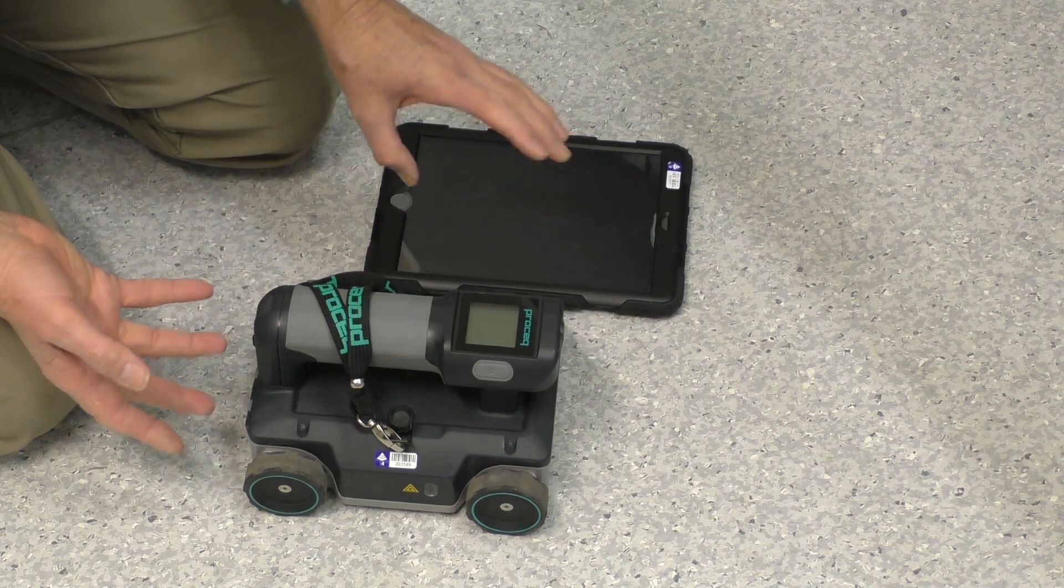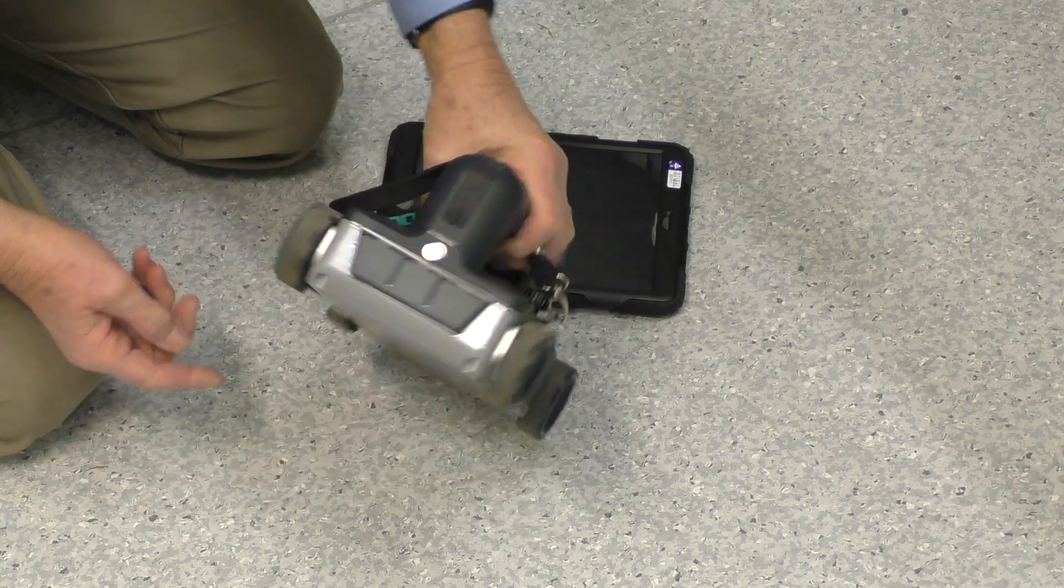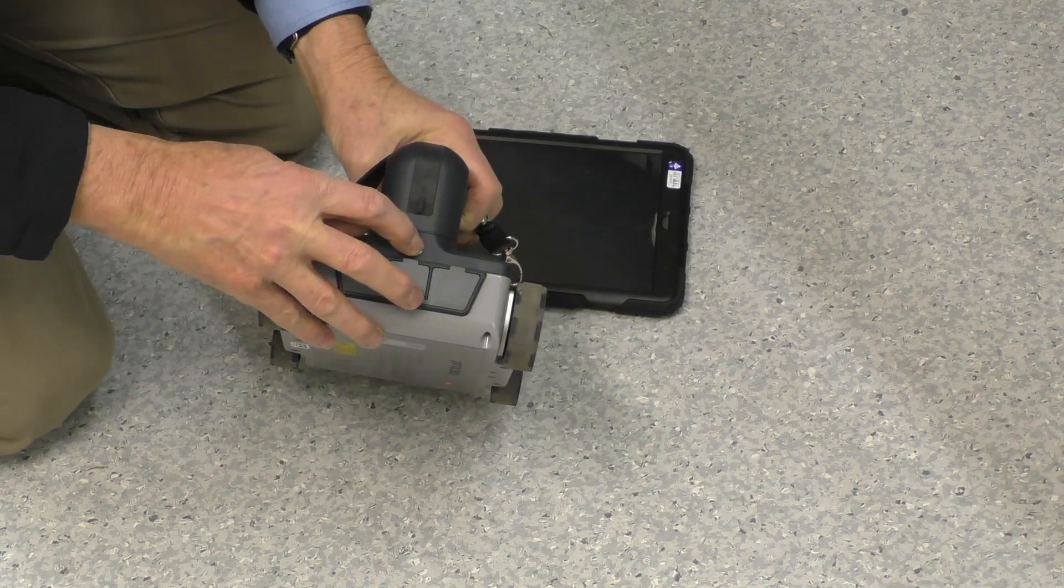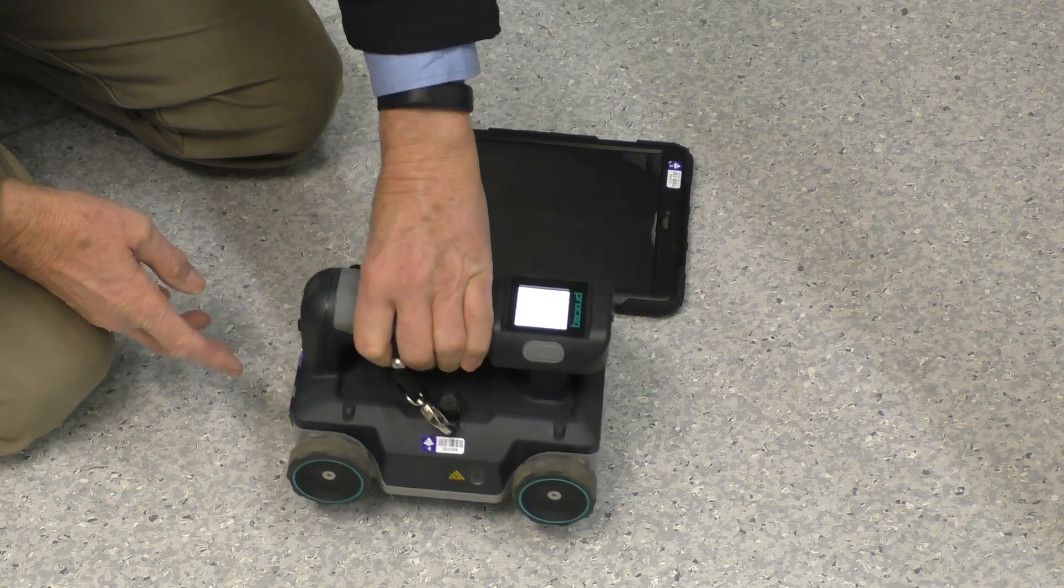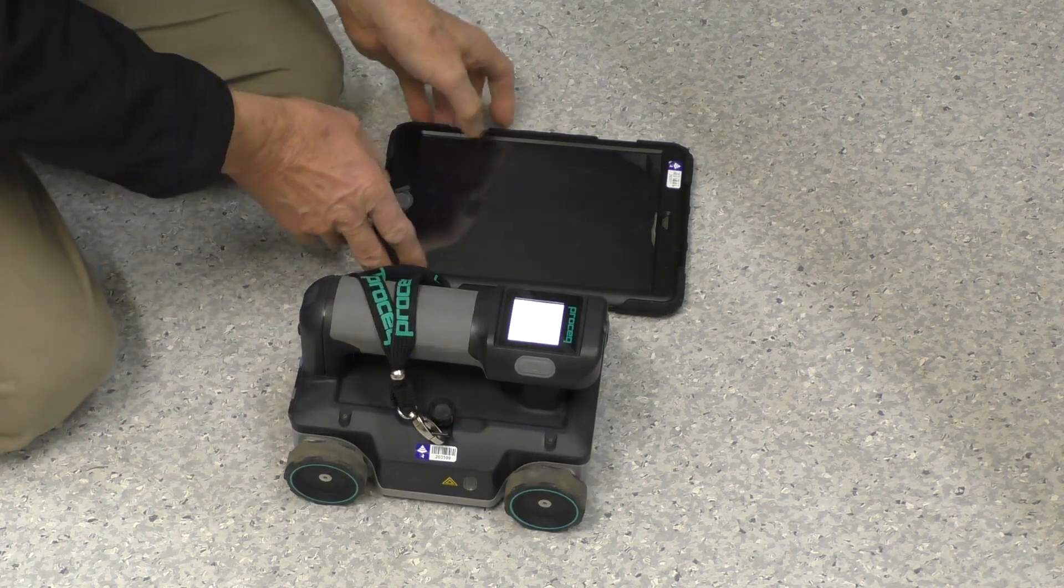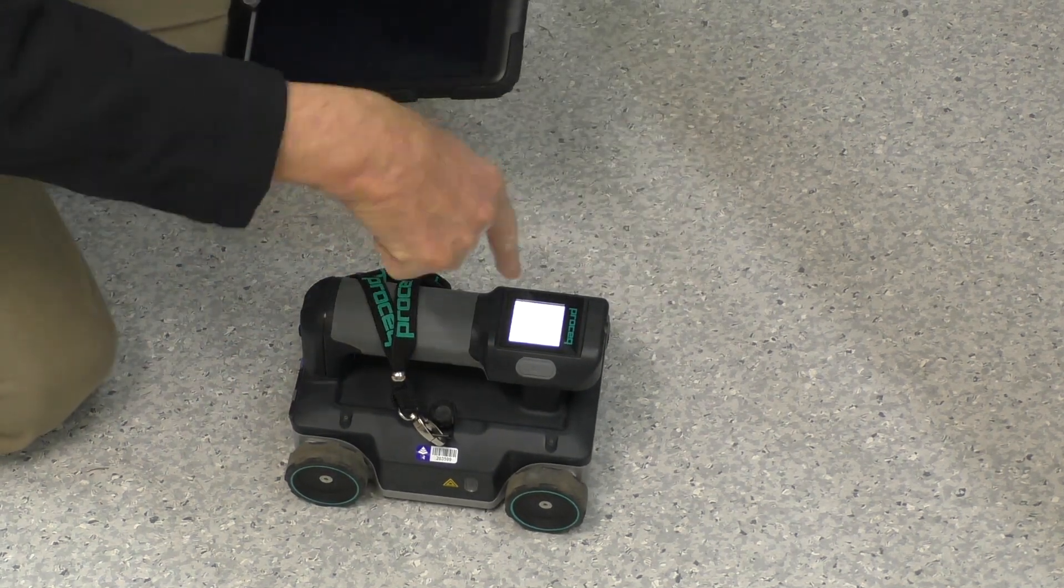I'm just going to demonstrate a line scan, very simple. We turn this on, we hit the button at the back, which turns this unit on. It then displays a QR code.